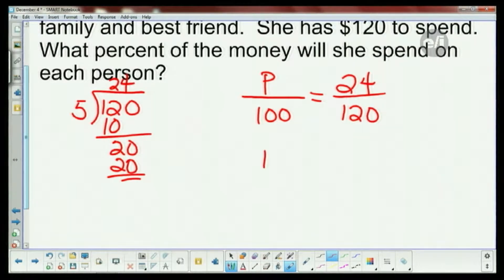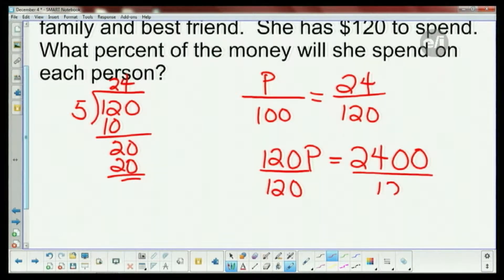Let me give myself a little bit more space. I have 120P equals—and then I'm just gonna quickly do 24 times 100. Remember, it's the 1 times 24 and then the two zeros, so now we're gonna quickly divide by the 120. This is the algebra that Laura was talking about. How many 120s are in 2400? There's 20. So if she were to spend the same amount on everybody, everybody gets 20%.